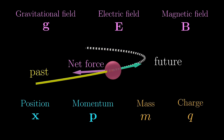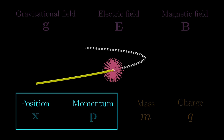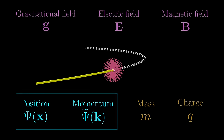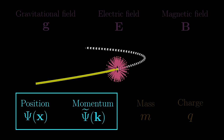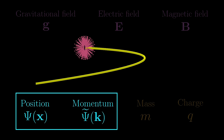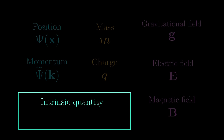In non-relativistic quantum mechanics, we would like to do something similar. The difference is there is no definite position or momentum — they have to be described by wave functions. And again, in principle, if we know all the information, we should be able to determine the future evolution of these wave functions. However, it turns out these are still not enough. We need an additional intrinsic quantity of the particle to predict the future evolution, and that extra quantity needed is the spin state.